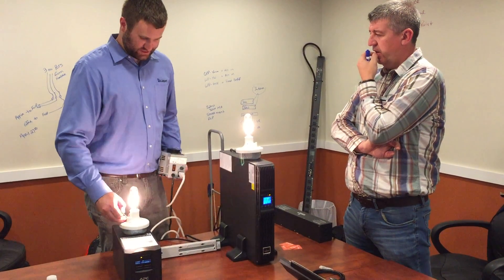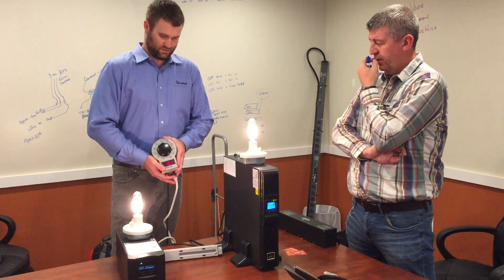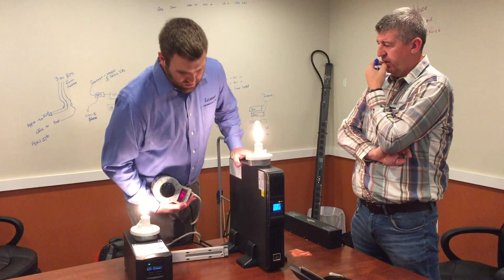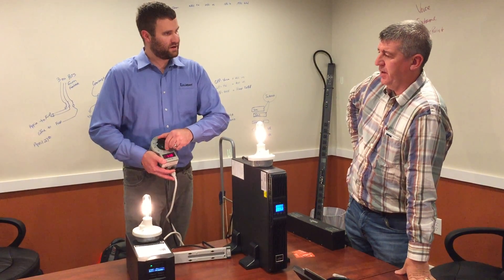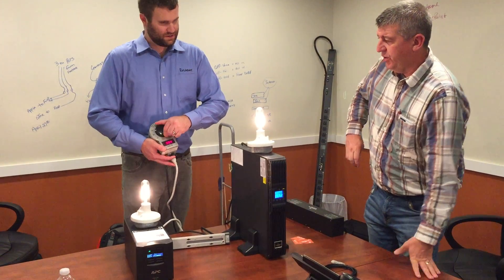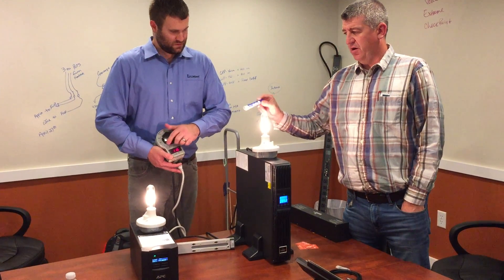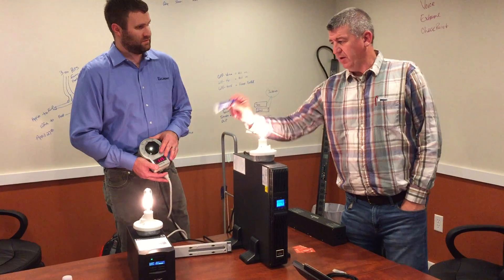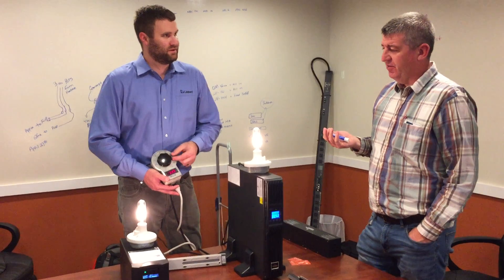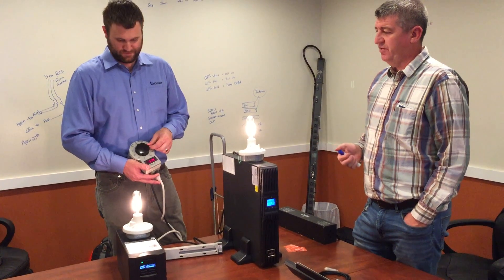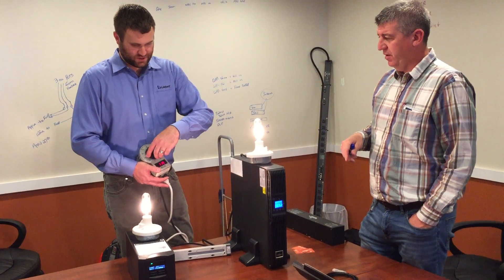Coming back to recovery voltage, we start charging the batteries again — still no change. A real-time blackout, like throwing a breaker or a thunderstorm power outage, would look exactly like this: no change on the double conversion output. Lining them both up side by side, you can see how there's just no change on the double conversion side. Each time a power event happens on the line interactive side, the switch's power supply is having to compensate, which cuts down on the lifespan of the power supply and the switch in general.